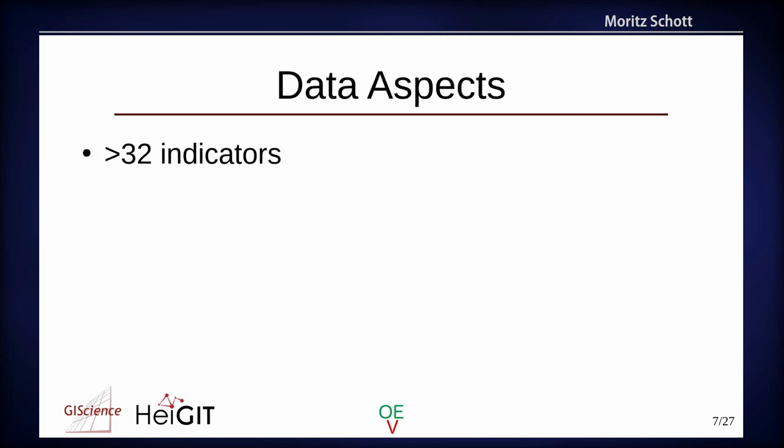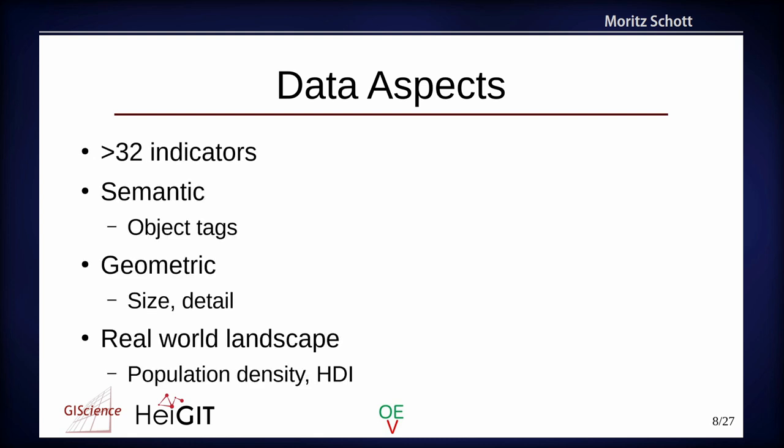Now let's get to the data aspect. We have more than 32 indicators that our tool creates, provides, and calculates for the user to later analyze. These indicators look into many different attributes or aspects of the data. We have the semantic category, for example object tags. I will not list all 32, just pick some nice ones.